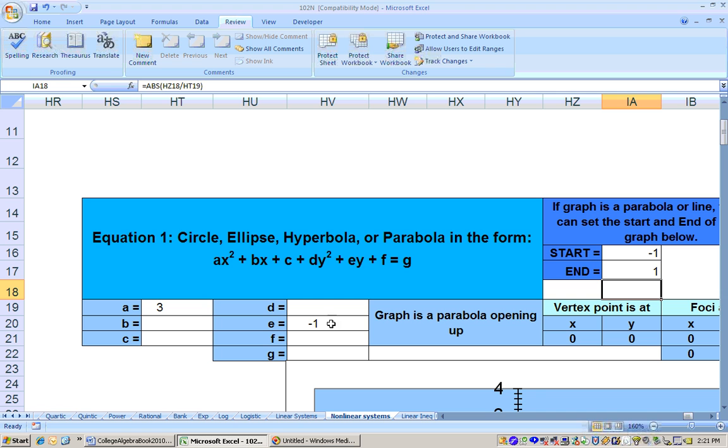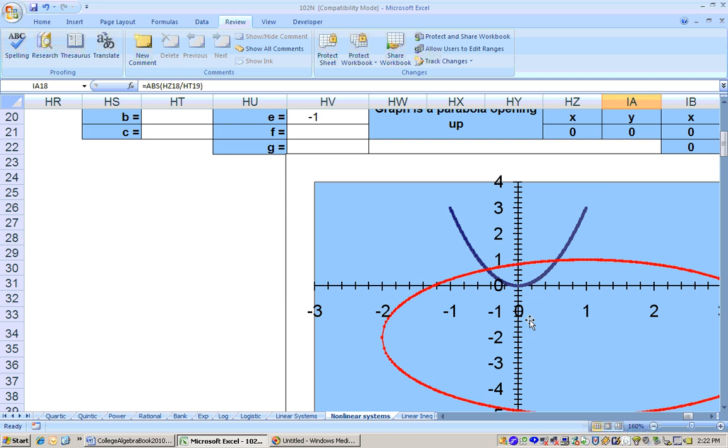And here's where the e is, the coefficient in front of the y to the first power. So that's negative 1. All the rest are 0. And that will get you that parabola right there.